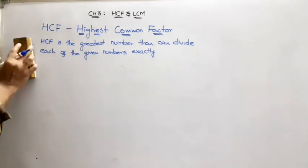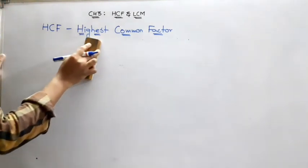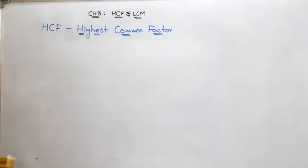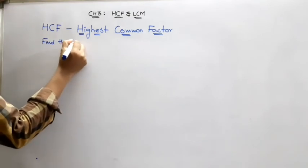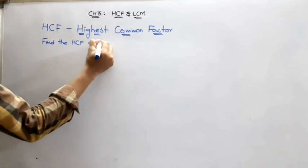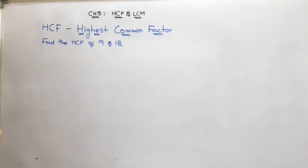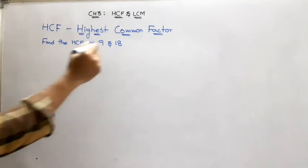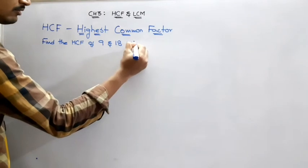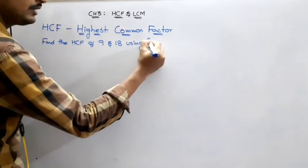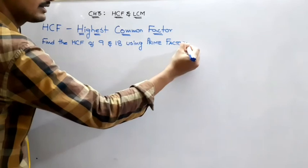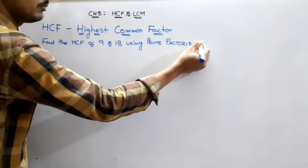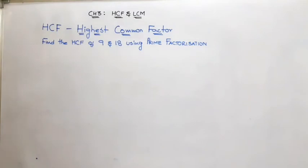Before actually going into the procedures, you should have firm knowledge regarding the concept of HCF first. I want to find the HCF of 9 and 18. The first method we are going to use to find the HCF is prime factorization, also called the prime factorization method — both are the same.